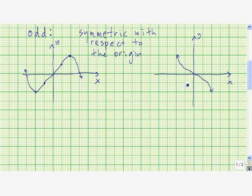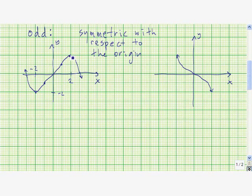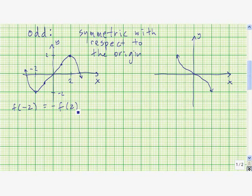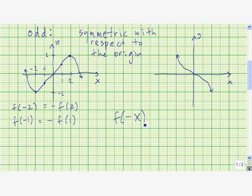Another way of thinking about odd functions is from an algebraic point of view. Let's look at x = -2 and x = 2: f(-2) = -2 and f(2) = 2, so the y-value at -2 is the negative of the y-value at 2. That says f(-2) = -f(2). Similarly, f(-1) = -f(1). More generally, for odd functions, f(-x) = -f(x). This is an important algebraic property of odd functions.